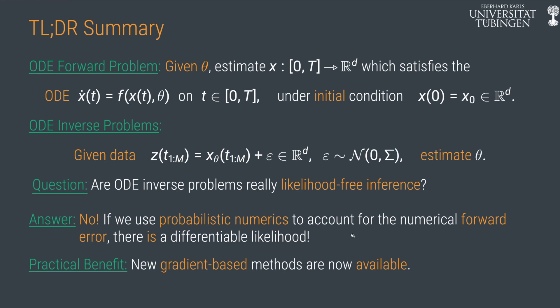If we use probabilistic numerics, which is an alternative to classical numerics where you account for the numerical errors in the same way you account for statistical errors by probability measures, to account for the numerical forward error, there is a likelihood and it is even differentiable.